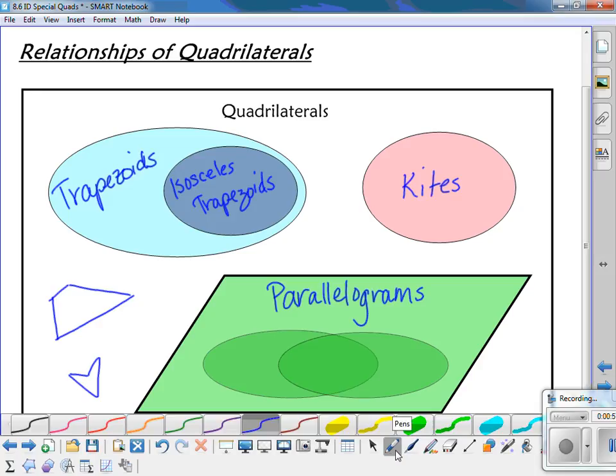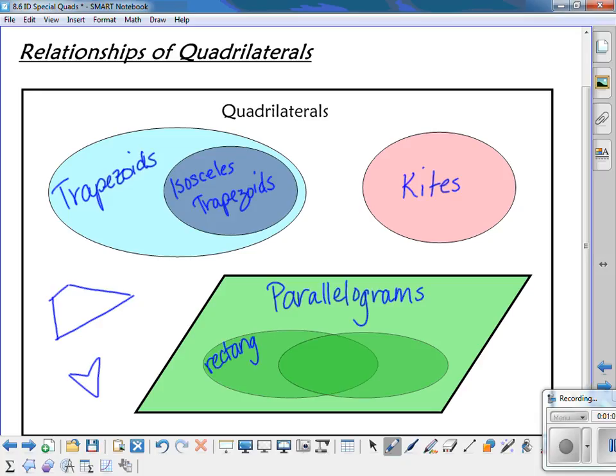But within parallelograms, we could have rectangles. We could have rhombi. And where our rectangles and rhombi overlap, we have squares. So those are the relationships among quadrilaterals.